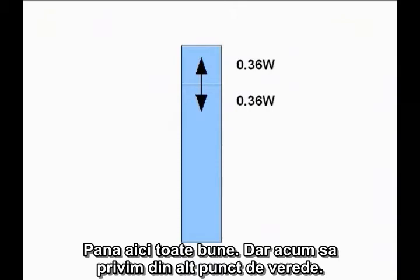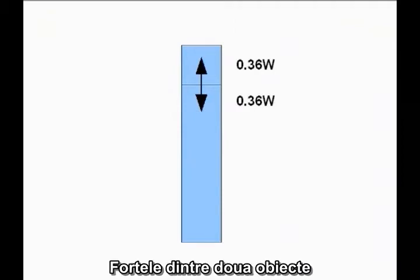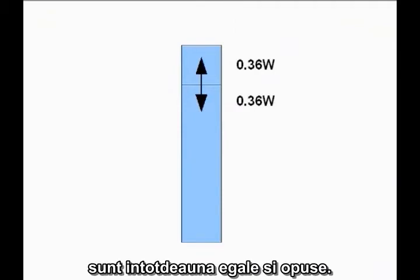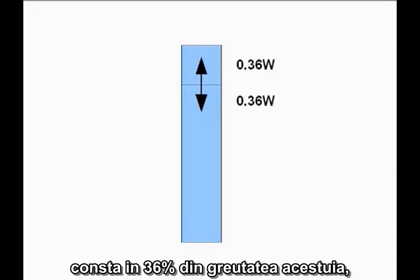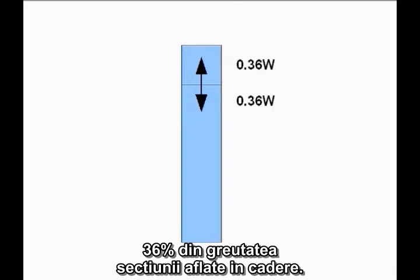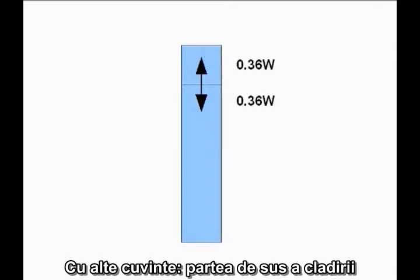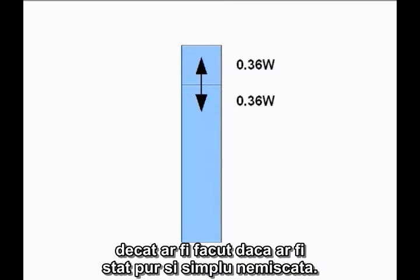But now turn it around. Newton's Third Law says interactions between objects work both ways. The forces two objects exert on each other are always equal and opposite. If the upward force acting on the falling block is 36% of the weight of the falling block, the downward force exerted by the falling block must be exactly the same — 36% of the weight of the falling block. In other words, the top section of the building is exerting less force on the lower, stronger, undamaged structure than it would if it were simply sitting motionless.